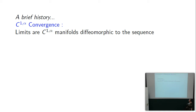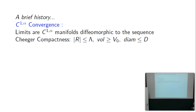Let's start with convergence of Riemannian manifolds. The first notion of convergence is C1-alpha convergence, introduced by Cheeger. The limits are C1-alpha manifolds which are diffeomorphic to the sequence of manifolds — you end up choosing a subsequence and they all end up diffeomorphic to each other. Cheeger proved a compactness theorem: if the sectional curvature is bounded on two sides, the volume is bounded below, and the diameter is less than or equal to d, then a subsequence converges in the C1-alpha sense.